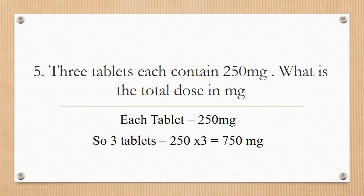Next question: three tablets, each containing 250 milligrams — what is the total dose in milligrams? Each tablet is 250 milligrams, so for three tablets: 250 × 3 = 750 milligrams. Always write the unit.